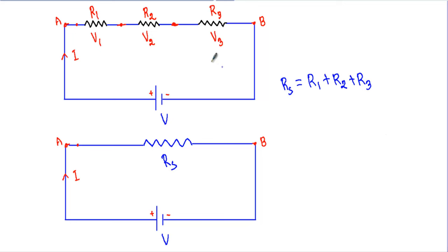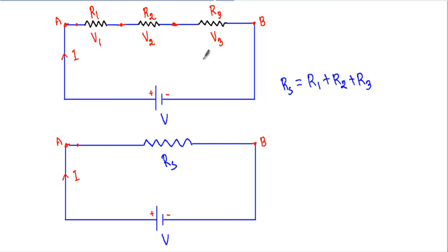Now let me briefly talk about the main features of a series circuit. First, the amount of current flow will be the same throughout the circuit — meaning the current through R1, R2, and R3 are all equal to I. Second, the total resistance RS equals the sum of the individual resistances. Third, the total power dissipated in the circuit is equal to the sum of the power dissipated in the individual resistances.